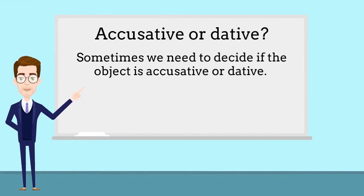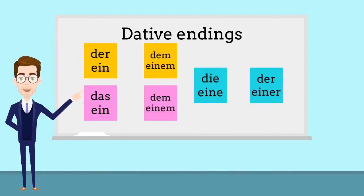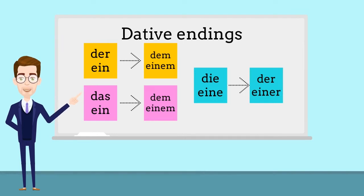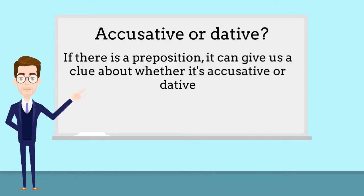Sometimes we need to decide if the object is accusative or dative. Masculine and neuter nouns both change in the same way, becoming dem and einem. Feminine changes to der and einer. If there's a preposition, it's really helpful because it shows us if we need the accusative or dative case.